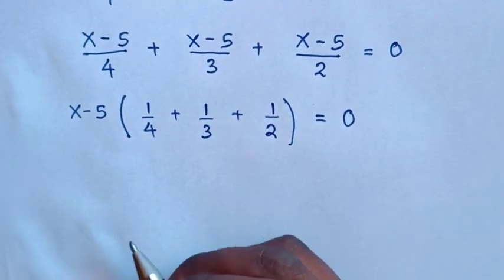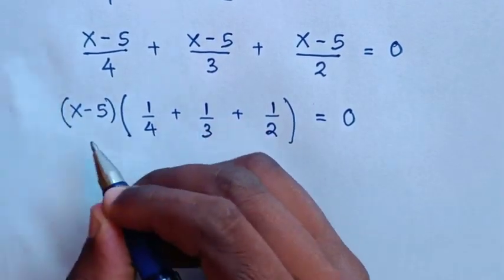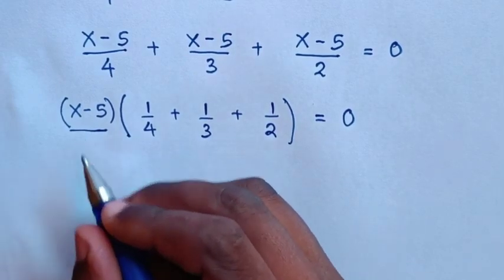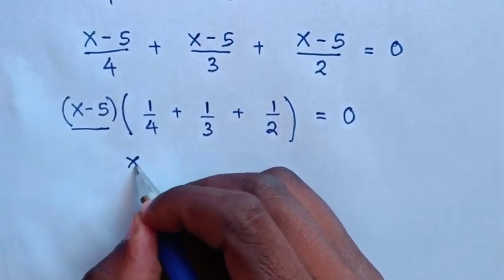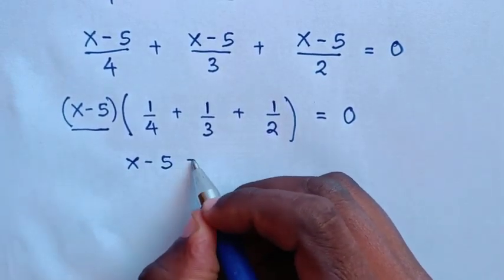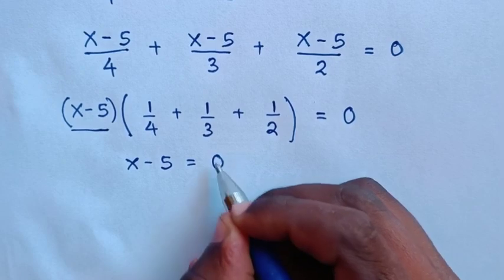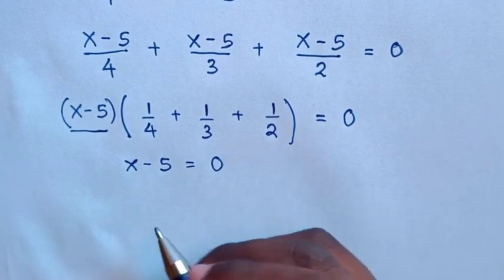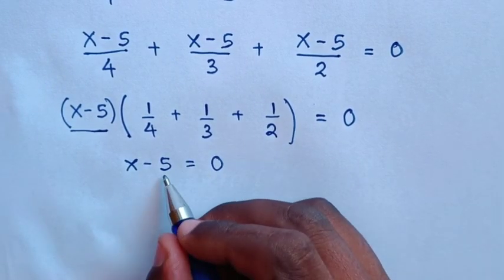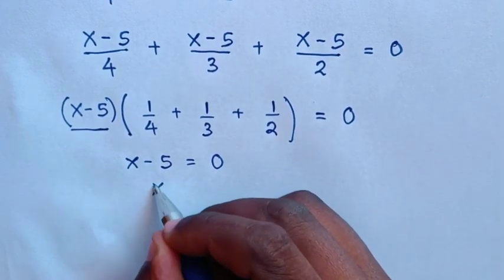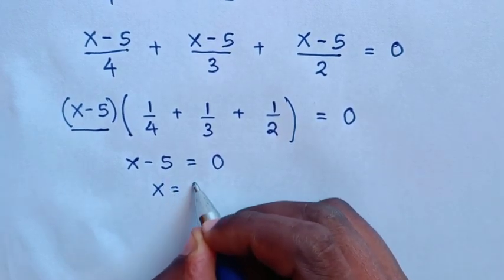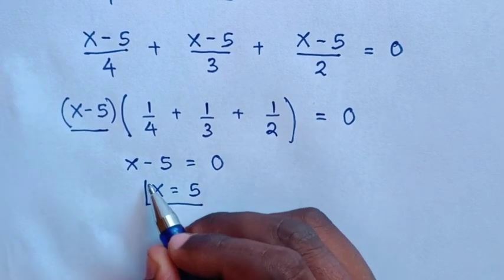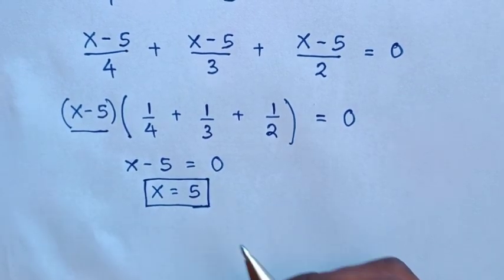Then we can find the value of x from the solution of x minus 5. So it will be x minus 5 is equal to 0. But here, there is no solution of x from the bracket because these are constants. Then we take negative 5 to the right side, so x is equal to 5. This is our final answer for the value of x.